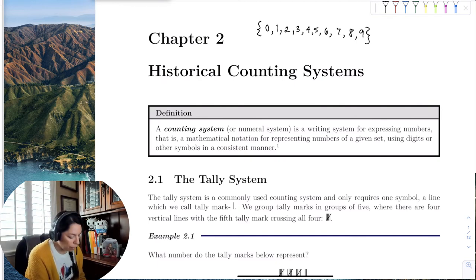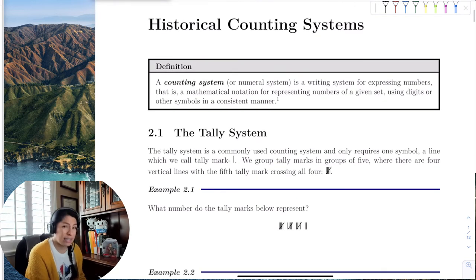So a counting system is just a system for writing numbers, right? And it's just a mathematical notation, we can use digits or other symbols. So for example, I always put in the tally system, because the tally is really not a number, but a symbol in which we represent numbers to count, right?